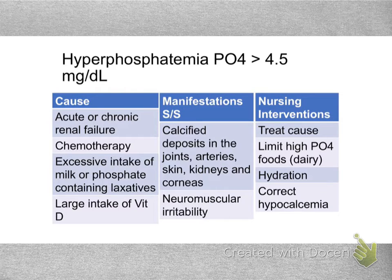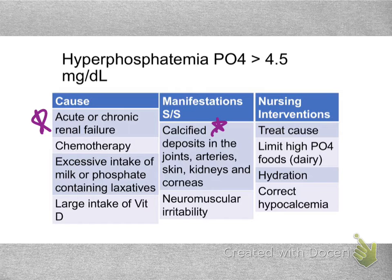High and low phosphorus typically don't have such acute manifestations like potassium does, but you can have more long-term problems with high phosphorus. A big culprit is renal failure, because phosphorus, like potassium, is excreted in urine. Long-term effects include calcified deposits in the skin, arteries, kidneys, and corneas. Hydration and limiting dietary intake will help. Phosphorus and calcium have an inverse relationship — low calcium levels mean higher phosphorus levels, and balancing that out will help correct both imbalances.